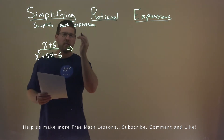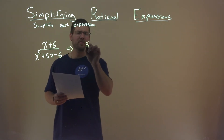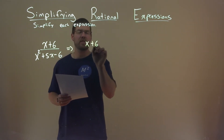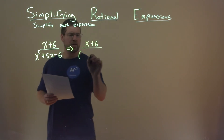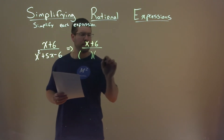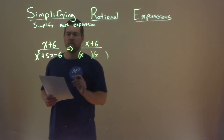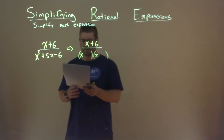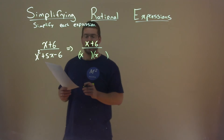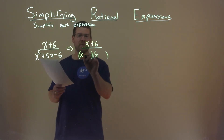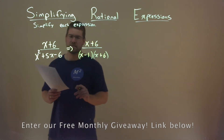Well, let's see if we can simplify the numerator and the denominator. x plus 6 really isn't in simplest form, but the denominator looks like I can factor that. We have an x and an x, and we have to find two numbers that multiply to be negative 6 but add to be a positive 5. And that's going to be a minus 1 and a positive 6.